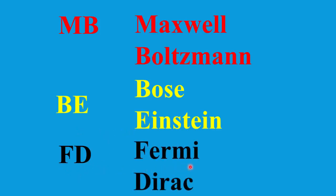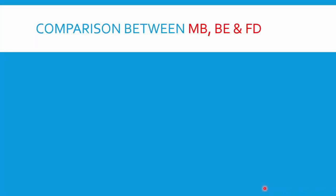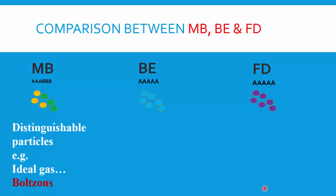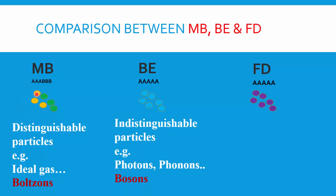Maxwell-Boltzmann statistics deals with macro particles, so it is also called classical statistics. Bose-Einstein and Fermi-Dirac statistics deal with micro particles, so they are together considered quantum statistics. Now for the comparison study: in Maxwell-Boltzmann statistics, the particles are distinguishable — meaning you can distinguish between them by color, size, or properties. If you have six particles of different sizes and colors, you can name three yellow ones as A, A, A and three green ones as B, B, B.